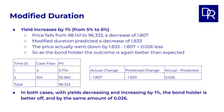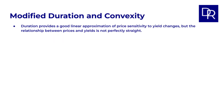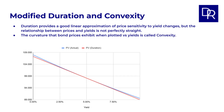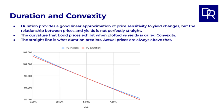In both cases, with yields decreasing and increasing by 1%, the bond holder is better off by the same amount. So what is going on here? The reason is that while duration provides a good linear approximation of price sensitivity to yield changes, the relationship between bond prices and yields is actually not perfectly straight. The curvature that bond prices exhibit when plotted versus yields is called convexity. You can see that in this graph here — the straight line is what duration would predict, and the actual prices are always a bit above that.